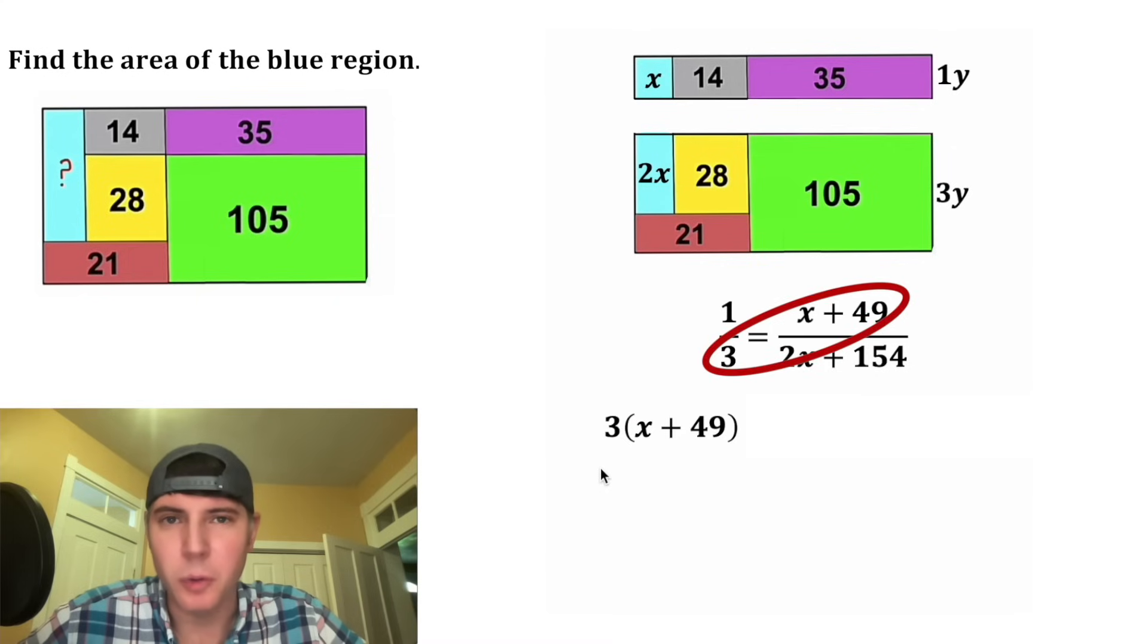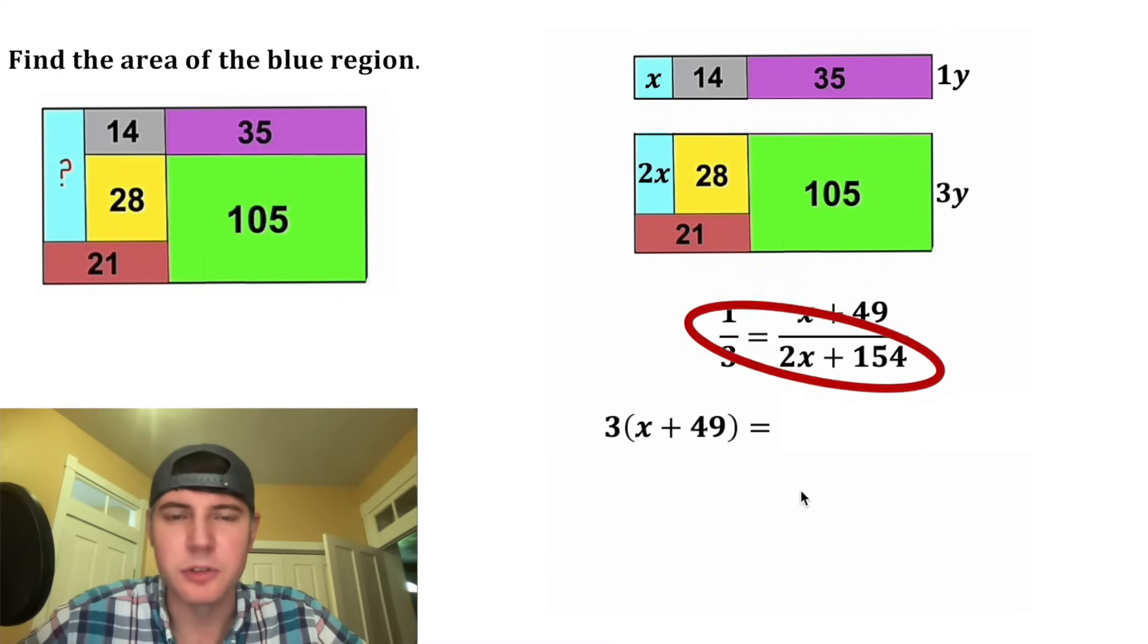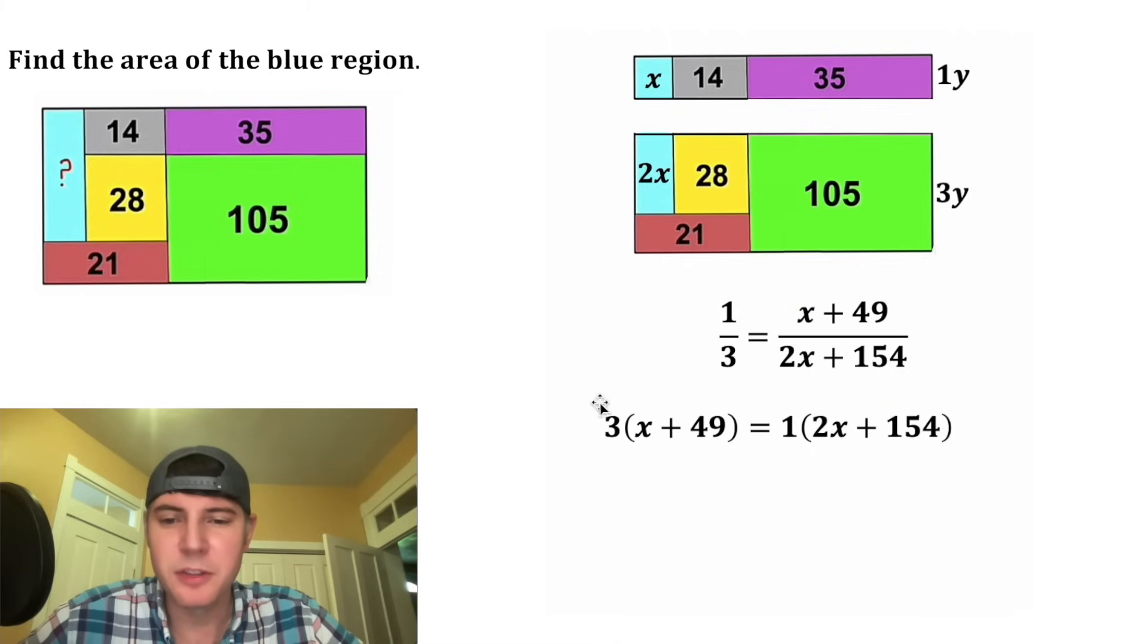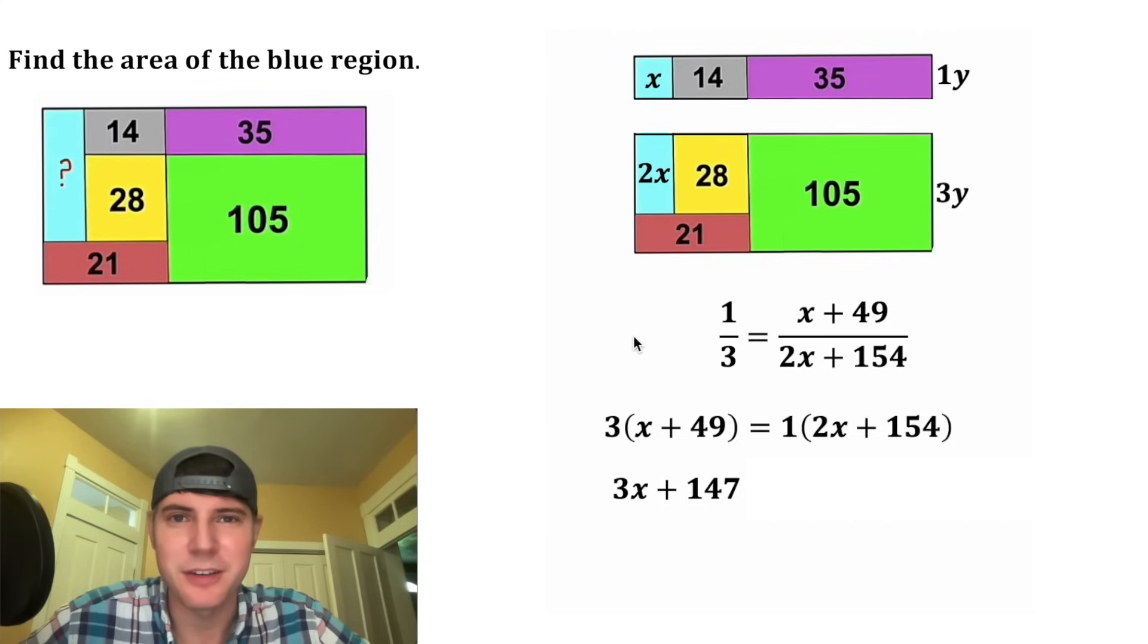We get 3 times the quantity x plus 49 is equal to 1 times the quantity 2x plus 154. And then we can distribute this 3 to both of these terms. 3 times x is 3x, and 3 times 49 is 147. And then on the right-hand side, this 1 isn't doing anything, so we have 2x plus 154.